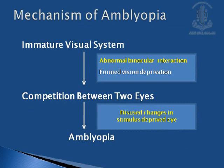When the immature visual system is attacked by abnormal binocular interaction and form visual deprivation, there occurs a competition between the two eyes, and disuse changes in the stimulus-deprived eye will lead to amblyopia.